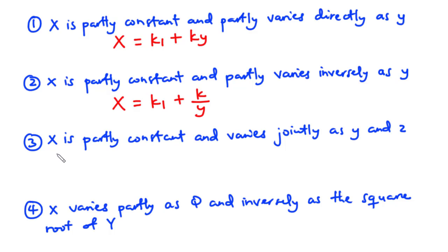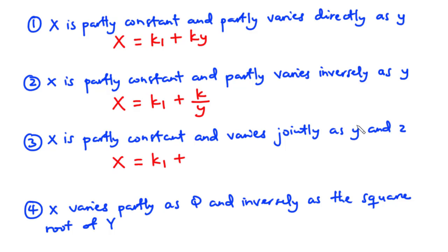For case three, x is partly constant and varies jointly as y and z. So x equals k1 plus k times y times z, because x varies jointly as y and z, so we multiply y and z together along with the constant k.